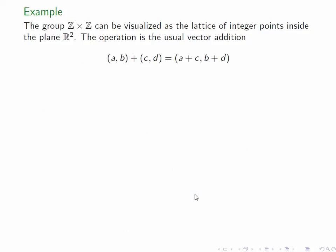Let's have a look at a couple of examples. If we take the integers under addition and form the direct product of ℤ with itself, we get a group that can be visualized as the lattice of integer points inside the plane ℝ² with the operation being the usual vector addition: (a,b) plus (c,d) equals (a+c, b+d).